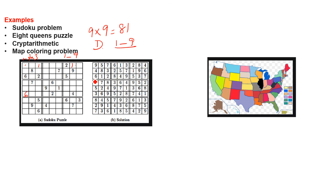You can verify this by checking each row and column — no number repeats in any row or column. Similarly, in Map Coloring, the rule is that neighboring regions must not have the same color. The colors are the domain, the regions are the variables, and the constraint is that neighboring variables must have different colors. I hope CSP is now clear. Please subscribe to Saima Academy, like and share, and see you in the next lesson. Thank you.